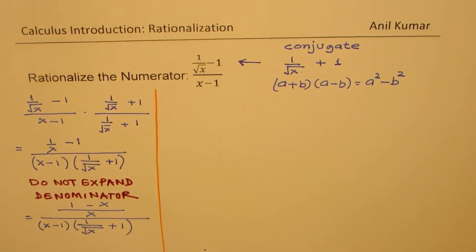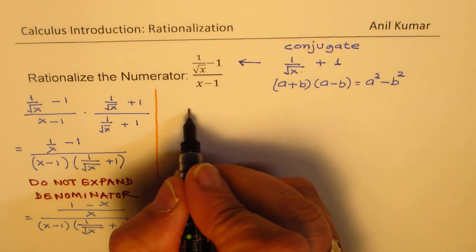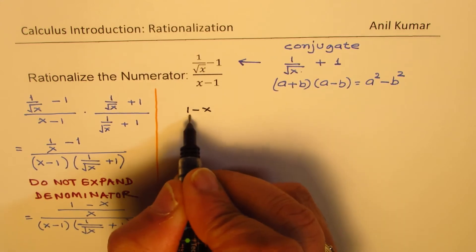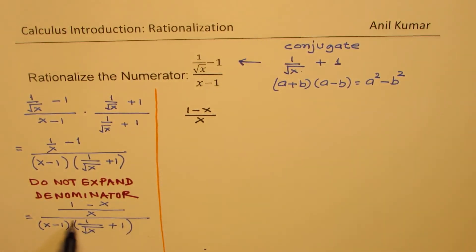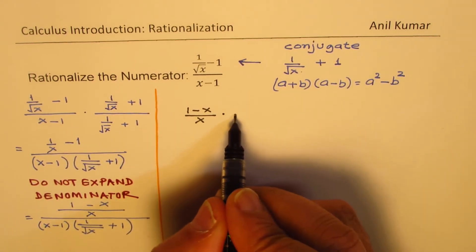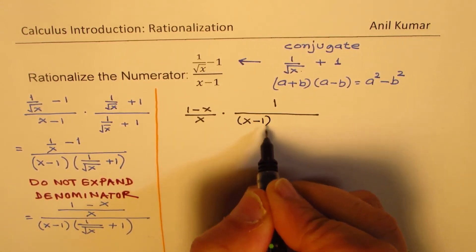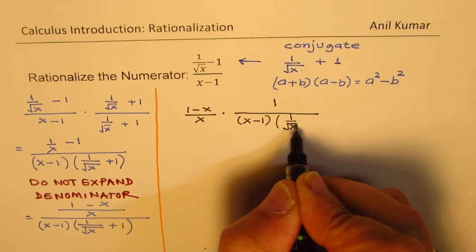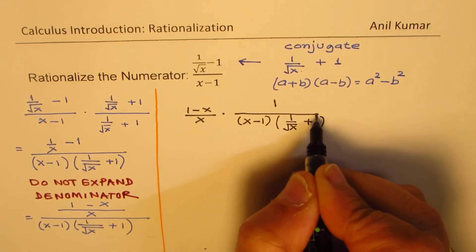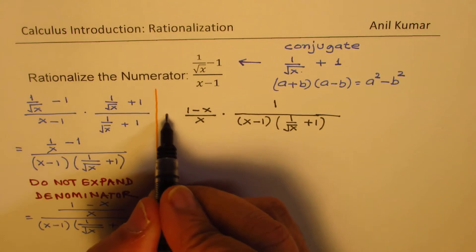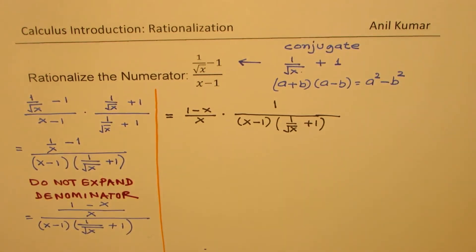Let's look into how to simplify. Working with multi-layer fractions is also a problem at many times. Look at it. It is 1 minus x over x. And the other expression given on this side is 1 over x minus 1 times 1 over square root of x plus 1. Does it make sense? So these are equivalent expressions. In writing like this, you have avoided that multi-layer fractions.